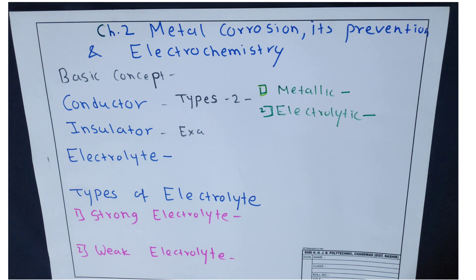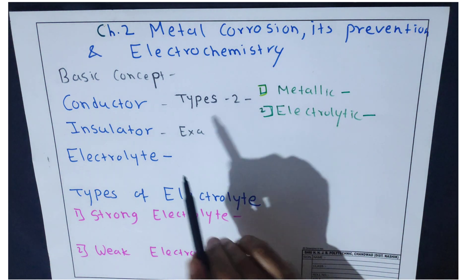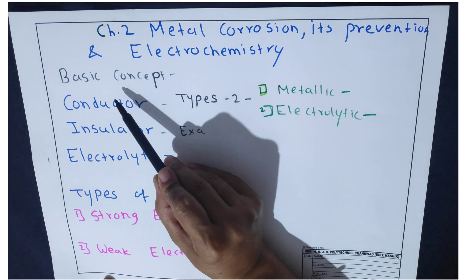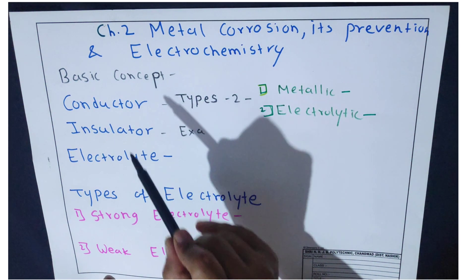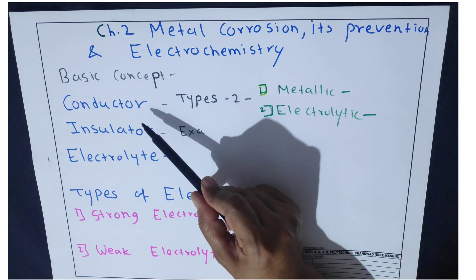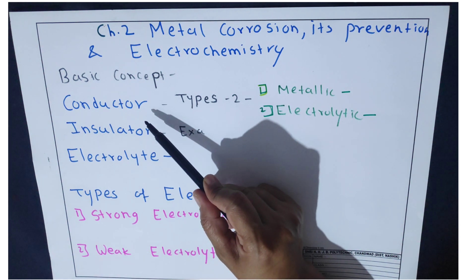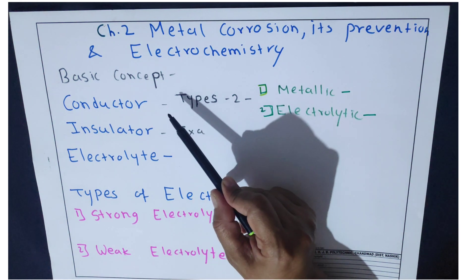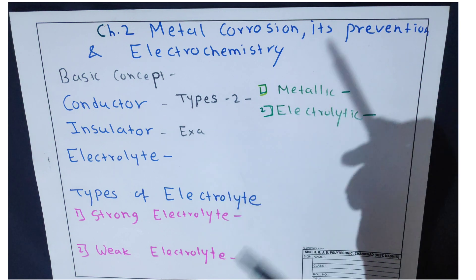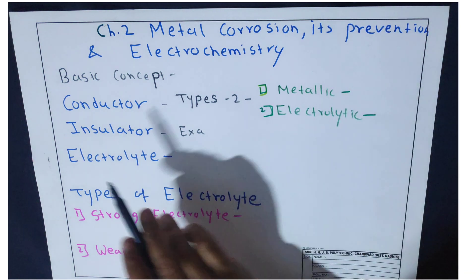Welcome students, this is our second chapter: metal corrosion, its prevention, and electrochemistry. Now we will see some basic concepts. The first topic is conductor. A conductor is a substance which allows electric current to pass through it.